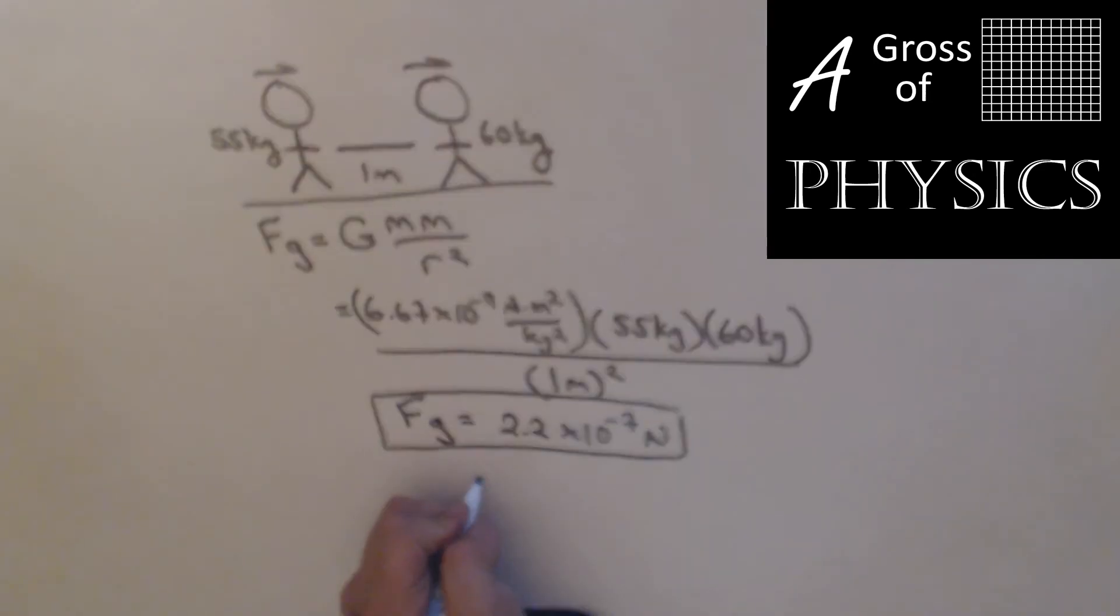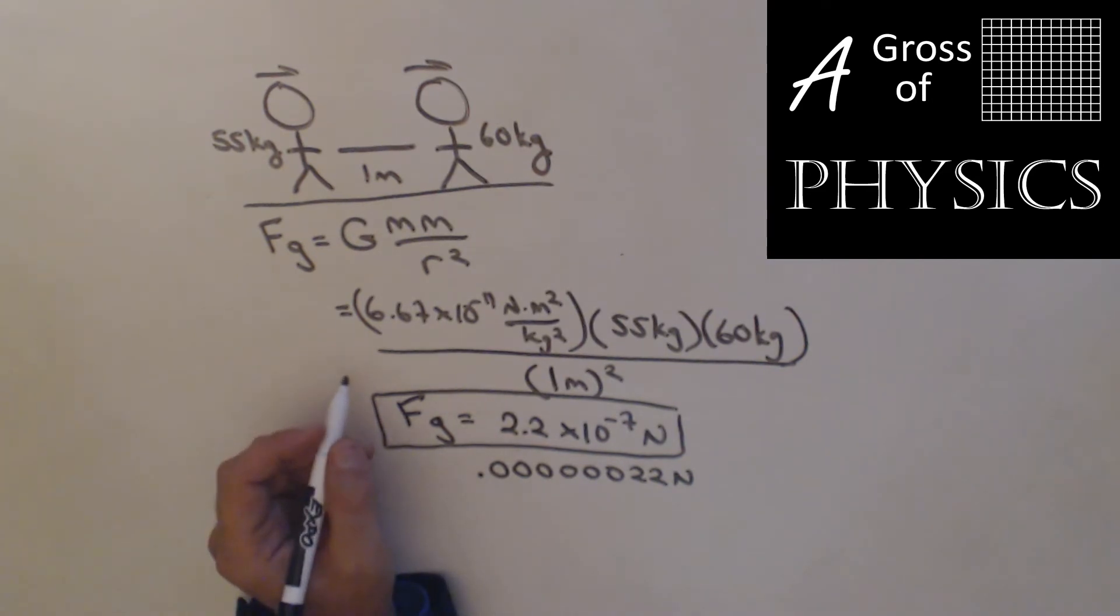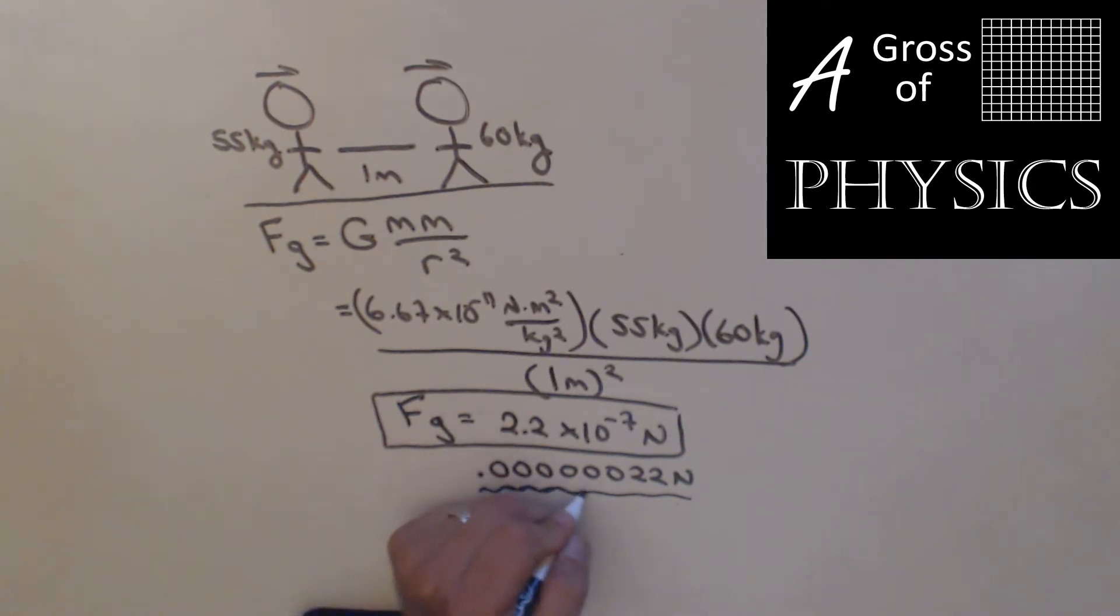You get the force of attraction between them is 2.2 times 10 to the negative 7 Newtons. Now if we write that out, that's 0.00000022 Newtons. Don't let anyone say that you're not attractive because you have a gravitational attraction no matter what. But this value is not very big so it's not going to account for too much in terms of getting prom dates or dates of any sort. You're probably going to have to work on your social skills a little bit as well.